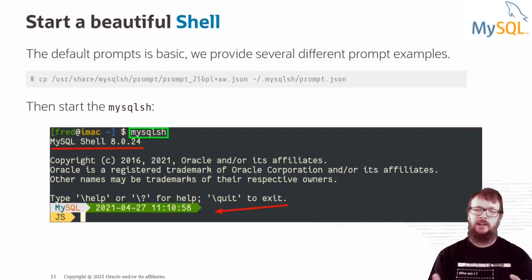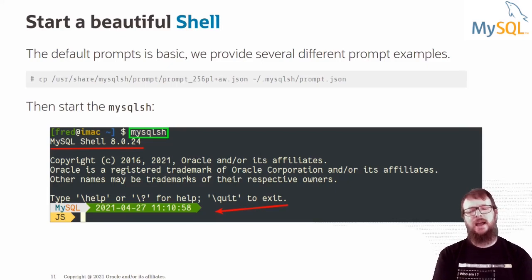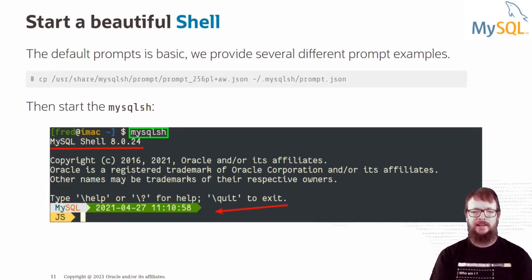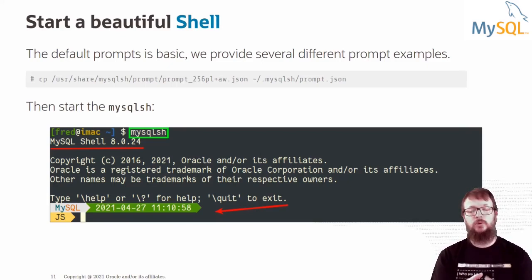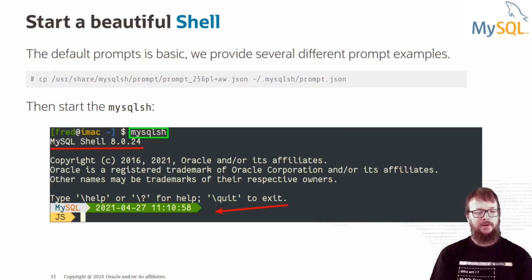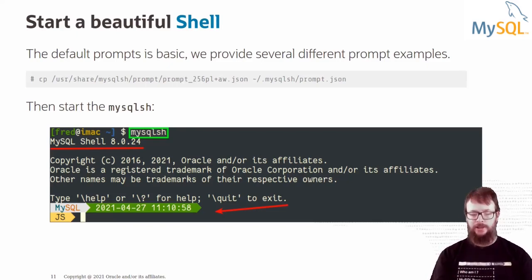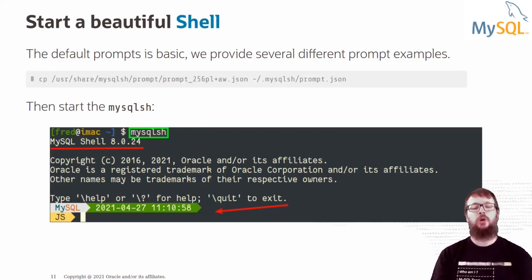When you start the shell, you are not connected — this is the difference between MySQL Shell and the classic MySQL client. With the classic client, you had to connect to a host when you started it. With the shell, you start it and you are not connected; you are in the shell. Then from the shell, you can connect directly from the command line.